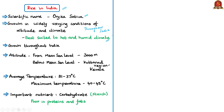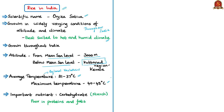Rice is grown in altitudes from 0 meters, that is mean sea level, up to about 3,000 meters. Rice is also grown at below mean sea level altitudes — the only such case in India is in the Kuttanad region of Kerala. The average temperature required for growing rice is 21 to 37 degrees Celsius, with a maximum of 40 to 42 degrees. Rice is a rich source of carbohydrates but a poor source of proteins and fats.